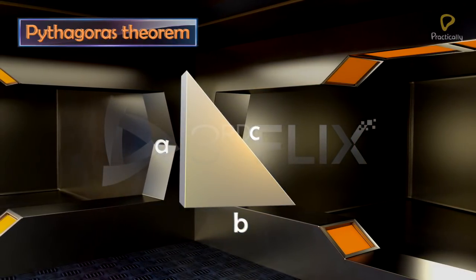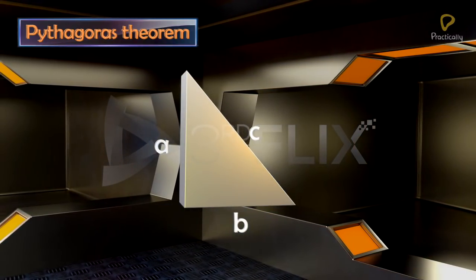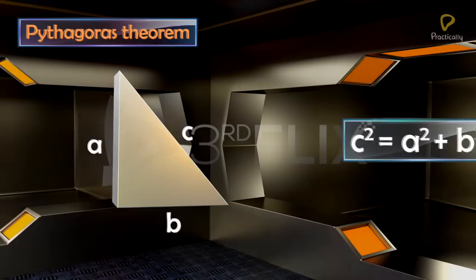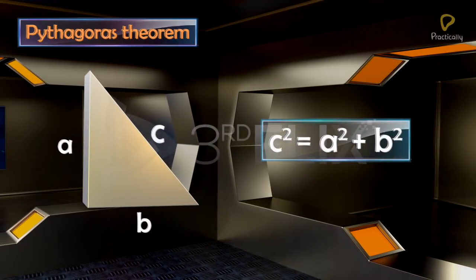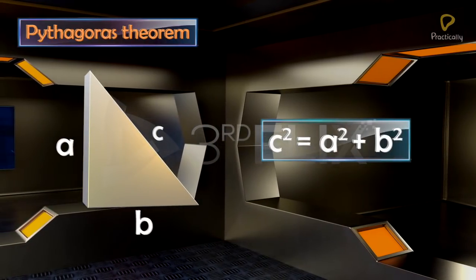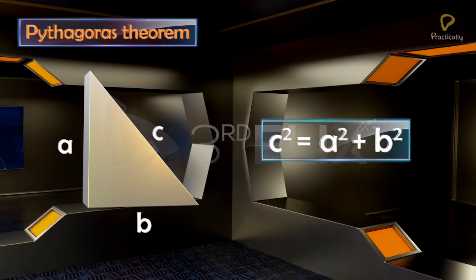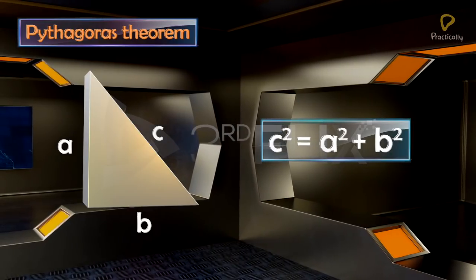Now let's verify the converse. That is, if the square of one side is equal to the sum of the squares of the other two sides, then is the triangle a right-angled triangle?